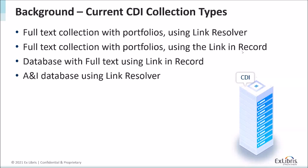Currently we have four main collection types. The first is a full-text collection with portfolios using a link resolver — the classic collection. In Alma or SFX, we have a collection with portfolios and titles at the journal level, book level, and so on. In CDI records, we have all the articles and book chapters, and we do rights and linking using the link resolver.